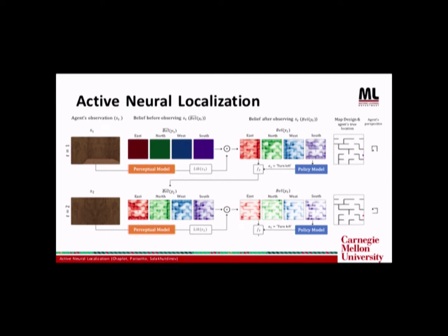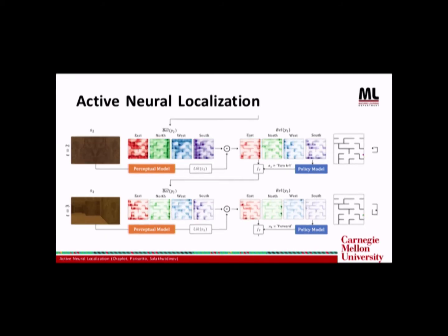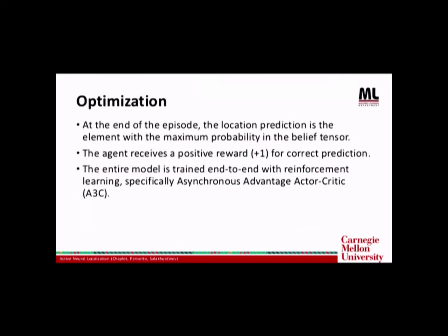So this whole process is repeated at each time step. And as the agent observes new frames, the belief is filtered. At the end of the episode, the location prediction is the element with the maximum probability in the belief tensor. And the agent receives a positive reward for correct prediction. And the entire model is fully differentiable, so it can be trained end-to-end with A3C.